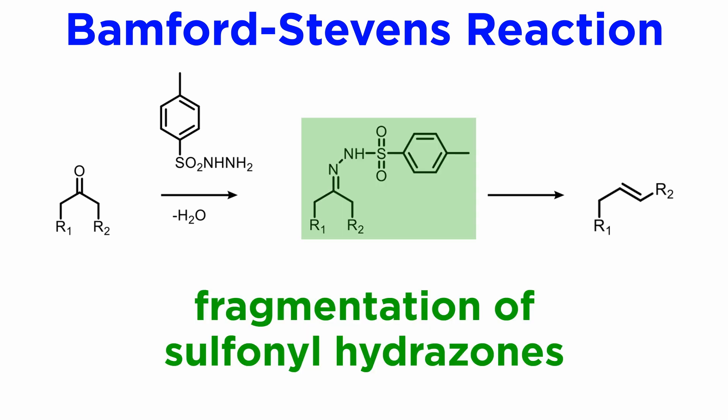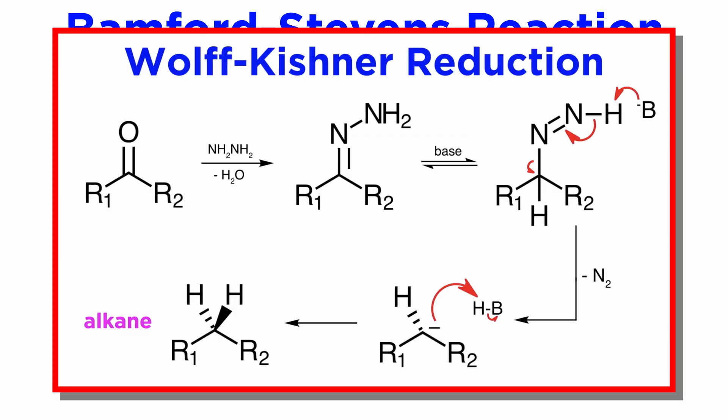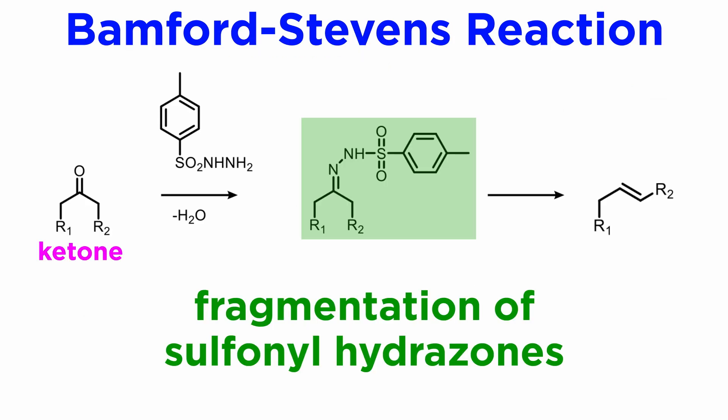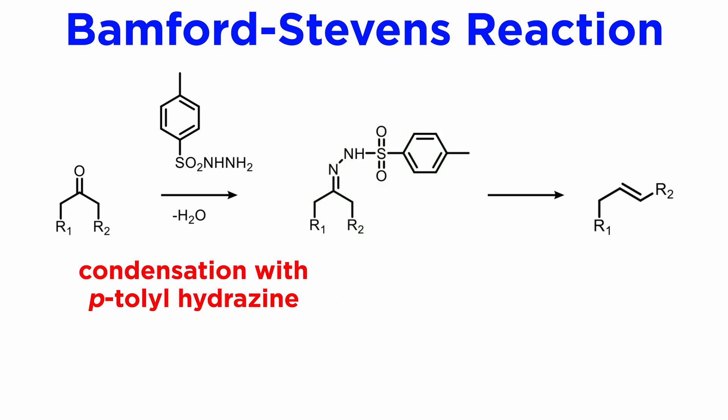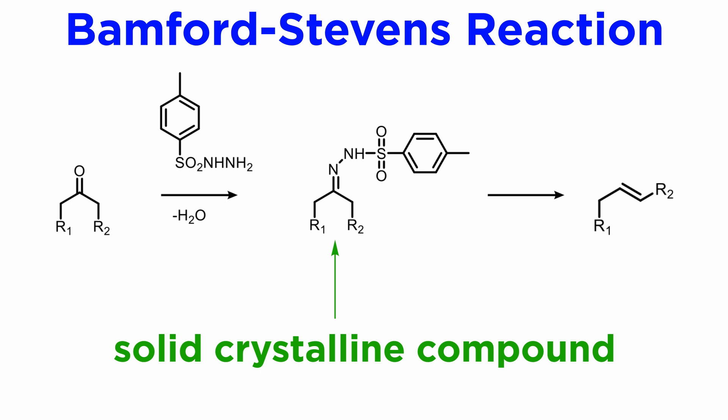Both reactions deal with the fragmentation chemistry of sulfonyl hydrazones. We have already discussed the condensation of ketones with hydrazine and the subsequent reduction of the resulting hydrazone, which was the Wolff-Kishner reaction. Just like for regular hydrazones, making sulfonyl hydrazones from ketones is quite easy. One needs to condense the carbonyl compound with a sulfonyl hydrazine, typically para-tolyl hydrazine, with removal of water, usually by azeotropic distillation. Tosyl hydrazones are usually solid crystalline compounds, which makes their purification convenient.